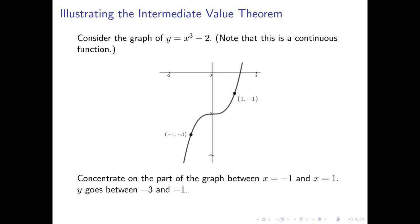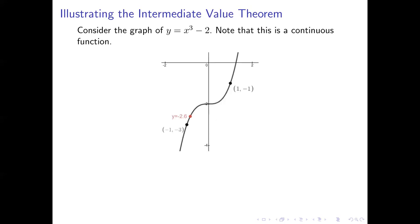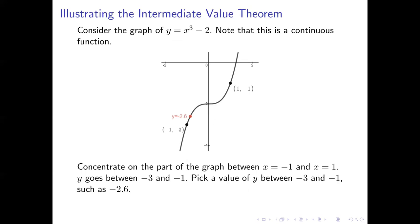Now let's concentrate just on the part of the graph between those two labeled points. y there goes between -3 and -1. So pick a number, any number you want, between -3 and -1. I'll use -2.6. There is the point on the graph where y equals -2.6. What the intermediate value theorem guarantees for us is that there's got to be some x value between -1 and 1 where f(x) equals -2.6. In other words, there's got to be some x coordinate of that point.